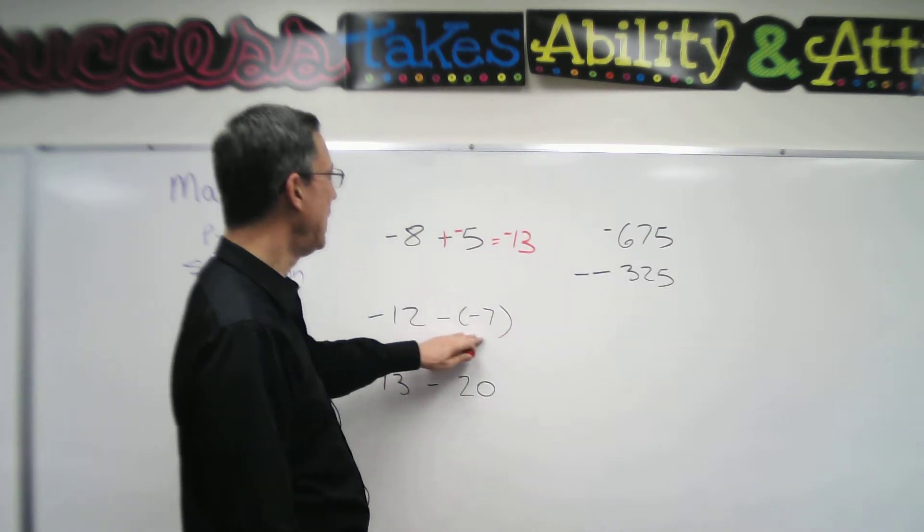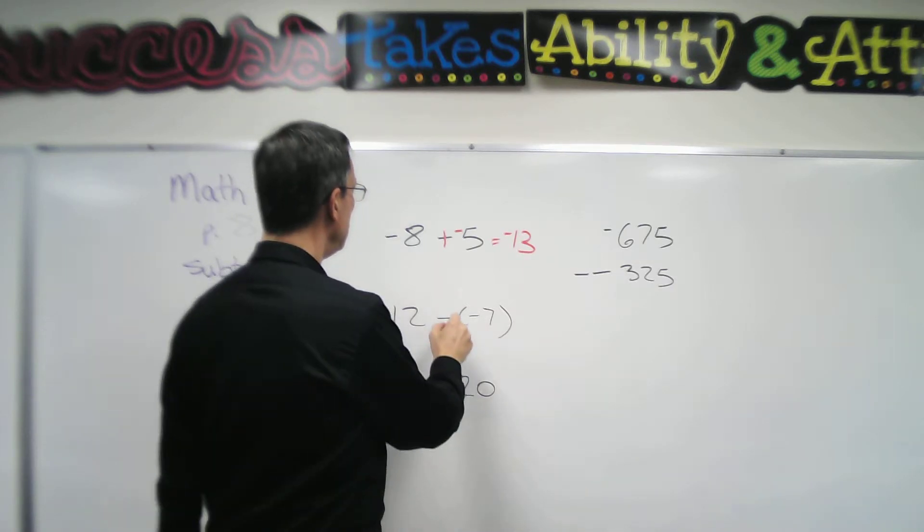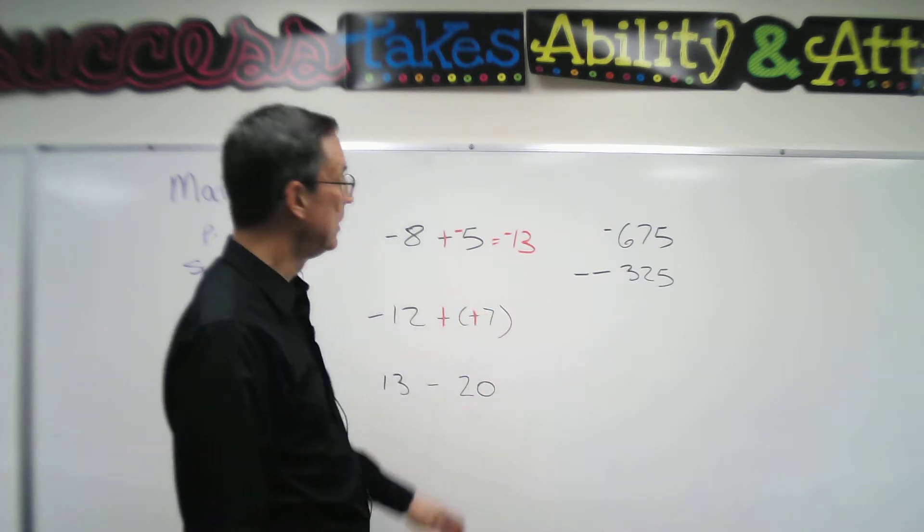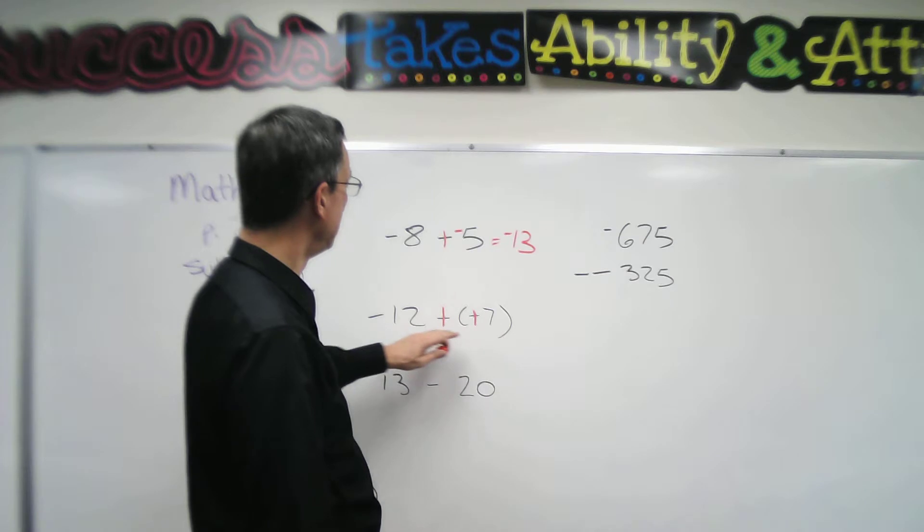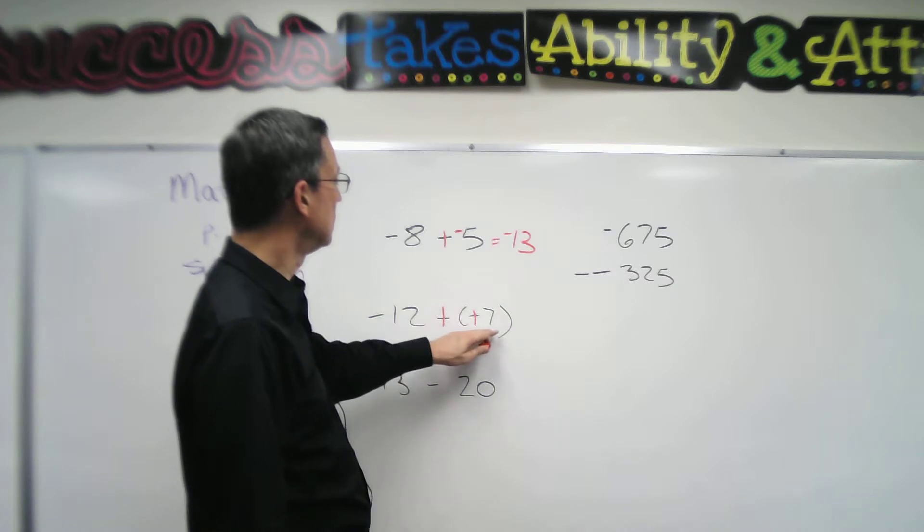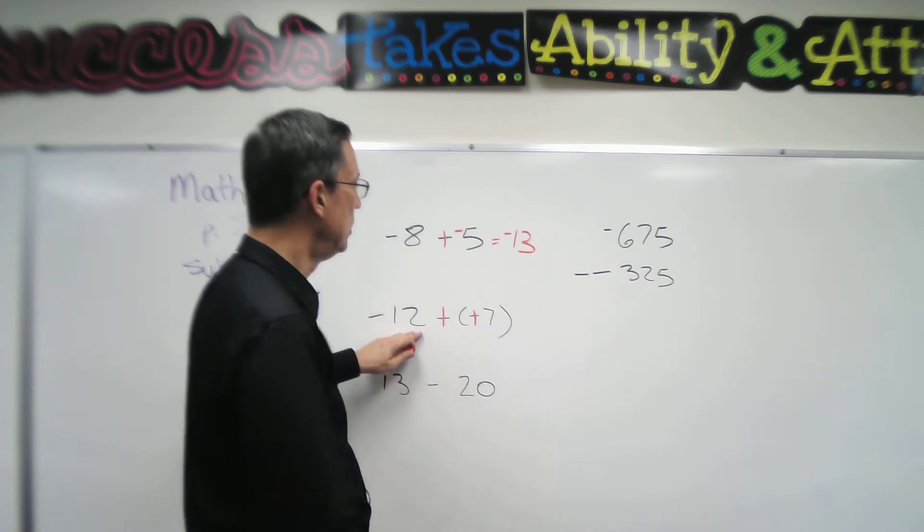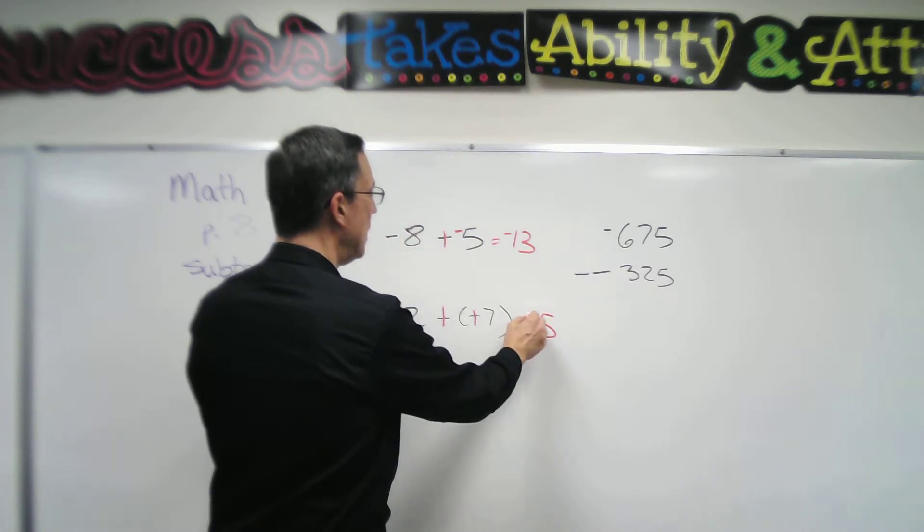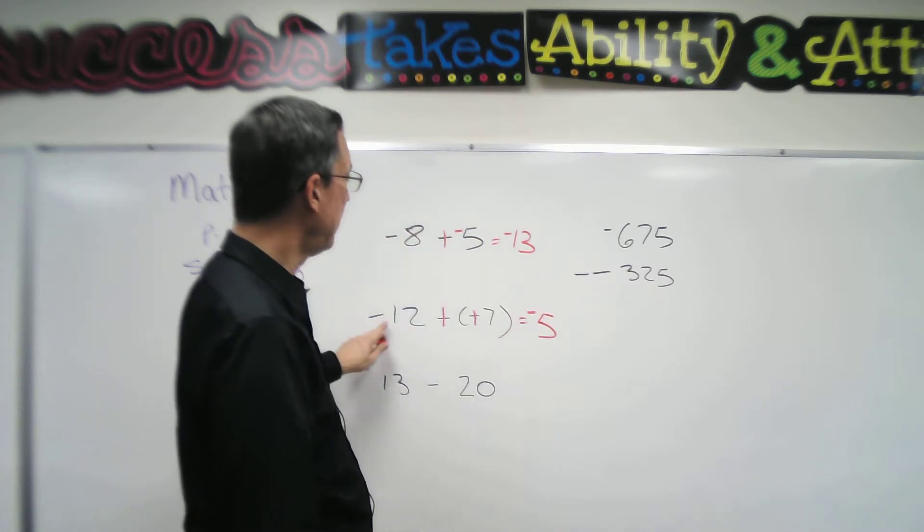Negative 12 minus negative 7, change subtraction to addition and change the second number to its opposite. Aha, now I have positive 7 added to negative 12. I have to think about the rule for adding when the signs are different. Subtract the smaller from the larger, keep the sign of the larger. So I get negative 5.